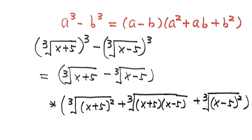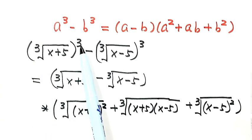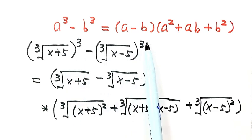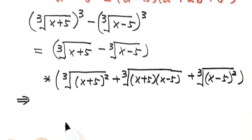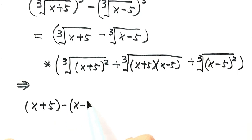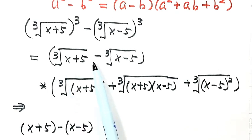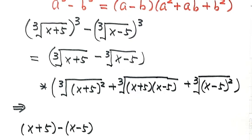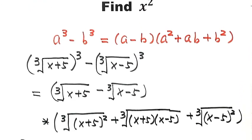Now let's simplify. On the left-hand side, the cube root and the power of 3 cancel, leaving (x+5) minus (x-5). On the right-hand side, the cube root minus cube root part equals 1, based on the given equation.